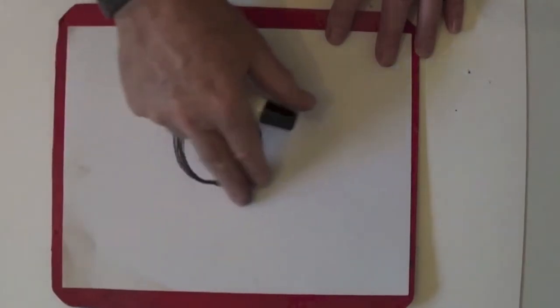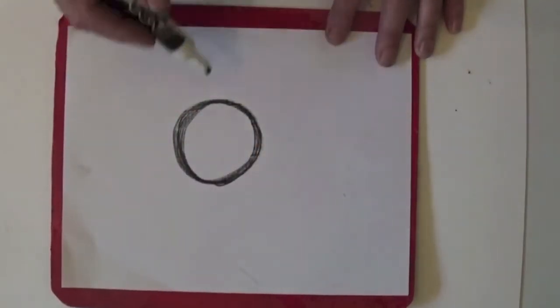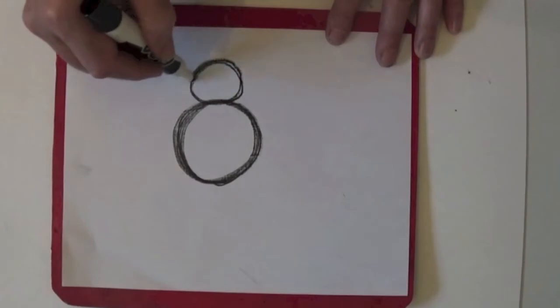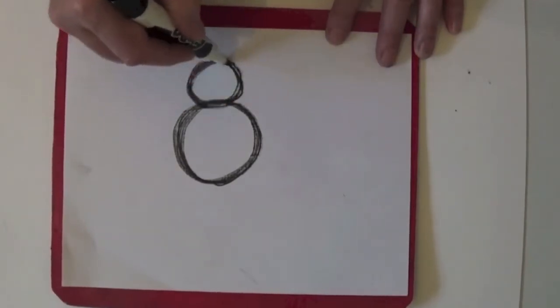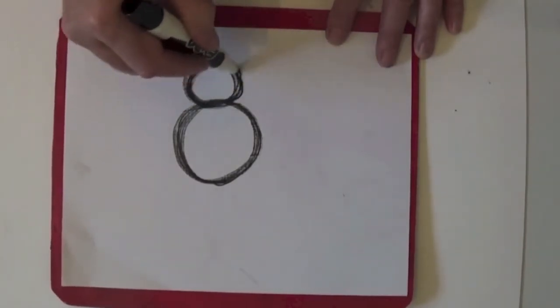Notice I put it in the middle of the paper. Now here's his head. His head's a little smaller than his body. He's a little chicken.